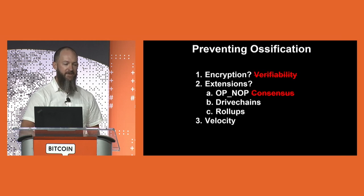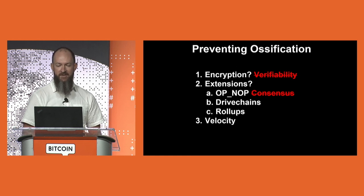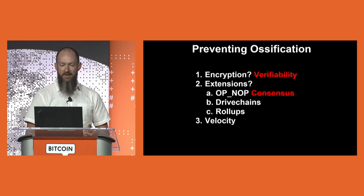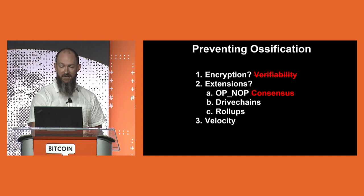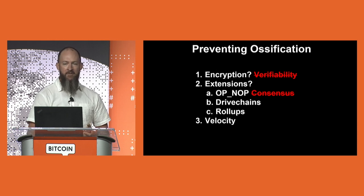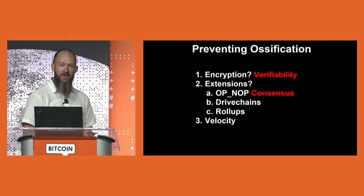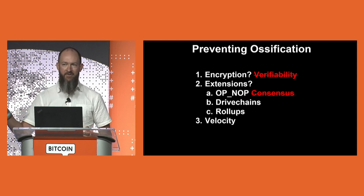To prevent ossification, there are standard ways people recommend. One is to encrypt data so it's not being verified — but of course that's a non-starter for consensus protocols. You hear a lot of talk about extension points; that can work for a narrow portion of protocols, but in practice you can never perfectly prevent ossification across the entire protocol. HTTP headers are one example that have avoided ossification, but only because people ignore unrecognized ones. In terms of extensions — op-nops and soft forks — that's what we've been doing, but it doesn't work in the long term. We need things like drive chains and roll-ups. We need the ability to have completely separate networks and environments tied to Bitcoin where people can do their innovation.